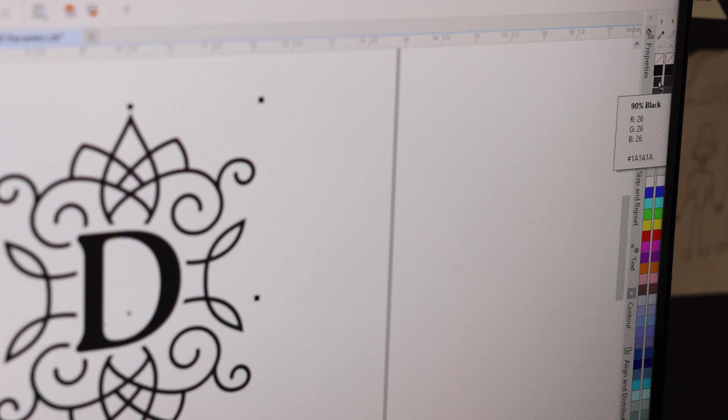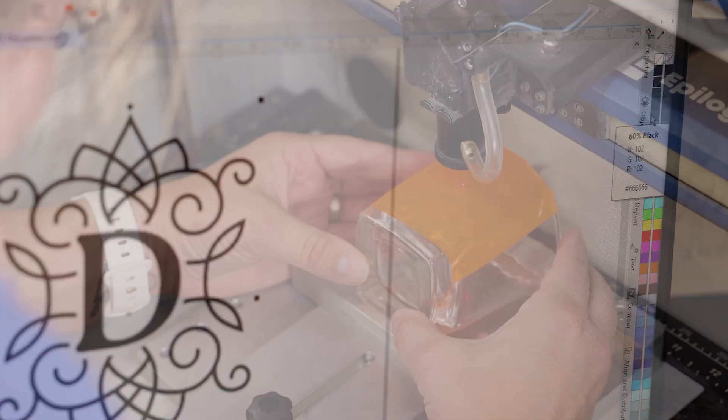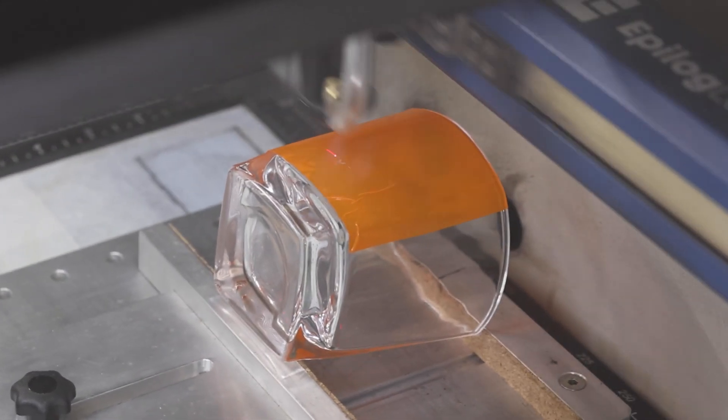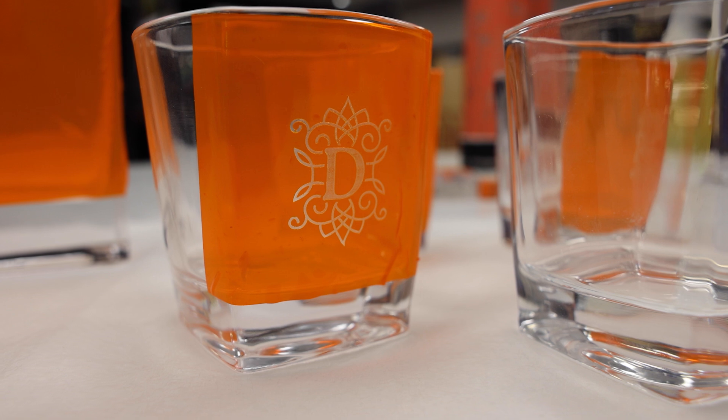Another tip you may have heard before is changing your percent of black of your image. For example, I can change my artwork to 80 percent black, which will also allow my laser to not fire as hot onto the glassware. That isn't something we use here on our machines, but something worth taking note of, as it may be best for your machine.